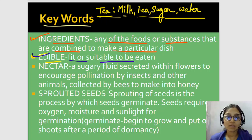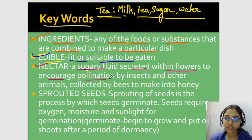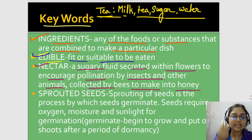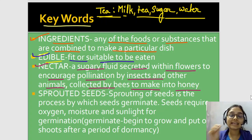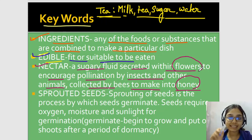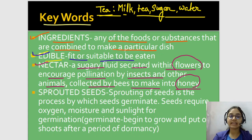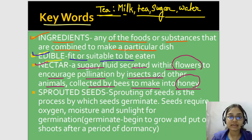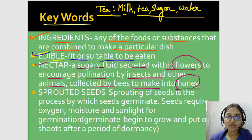Now let's talk about nectar. Nectar is a sugary fluid secreted within flowers to encourage pollination by insects and other animals, and it is collected by bees to make into honey. So nectar ek meetha meetha fluid hota hai jo flowers mein hota hai — jisse insects aur animals pollination karte hain, aur bees is fluid ko collect karke shahad banaate hain.